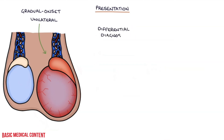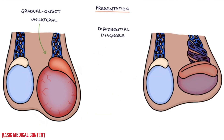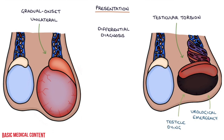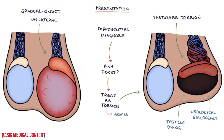The key differential diagnosis for epididymo-orchitis is testicular torsion. Testicular torsion is a urological emergency that requires rapid treatment to avoid the testicle from dying. Both present similarly with acute onset of pain in one testicle, so if there's any doubt, treat the patient as though they've got testicular torsion until proven otherwise. This will involve admitting the patient to hospital under the care of the urologist to consider emergency surgery.